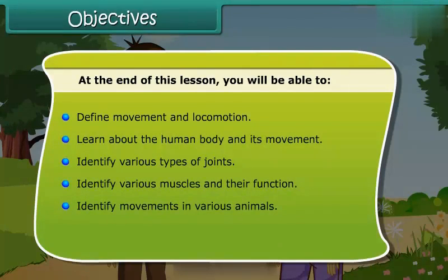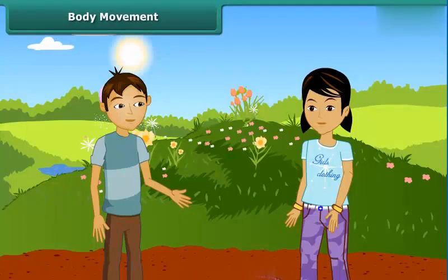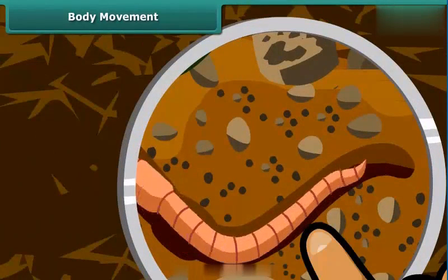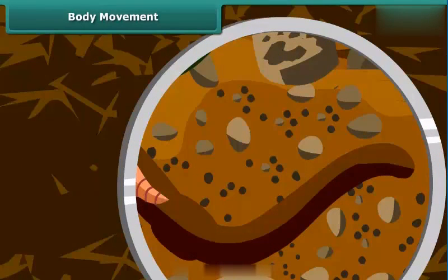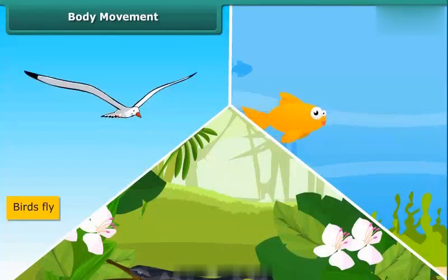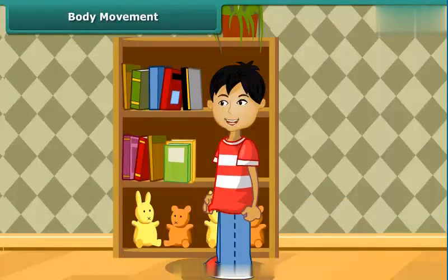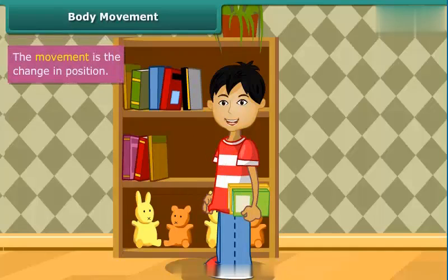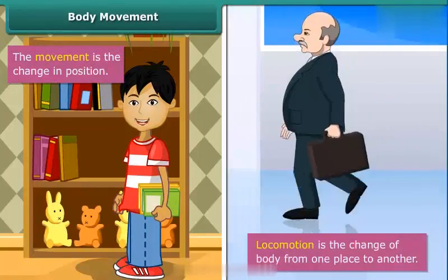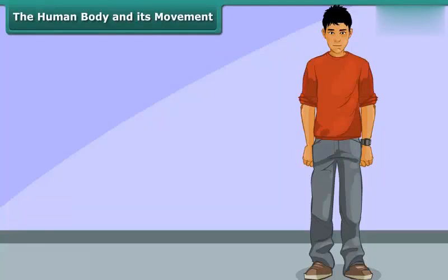Identify movements in various animals and identify the streamlined body. As we walk or run, earthworms creep or crawl, birds fly, fish swim, and snakes slither. We can also see that we move various parts of our body — like when we pick up a book, we move our hand. Movement is the change in position, while locomotion is the change of body from one place to another.